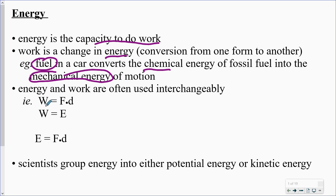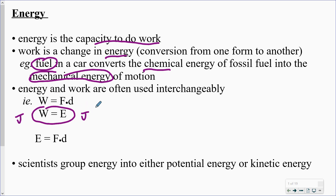So work is equal to force times distance. The big dot means multiplication, and it's really the delta D, the change in distance. Work and energy are kind of equivalent, especially when we talk about the units — they are joules for both of those. So if work is equal to force times distance, and work is equal to energy, then we can also say that energy as well is equal to force times distance.